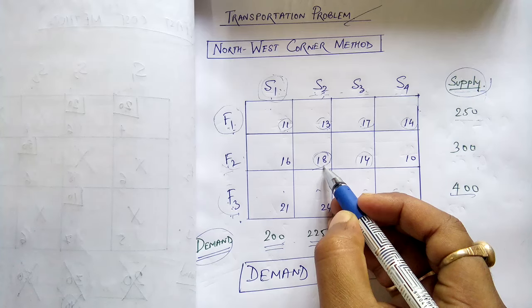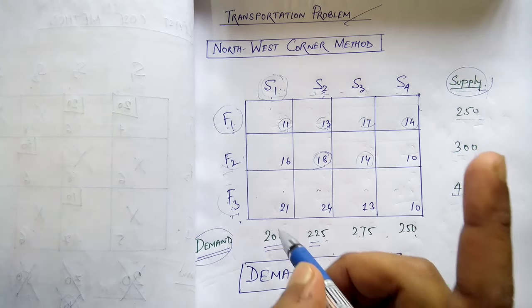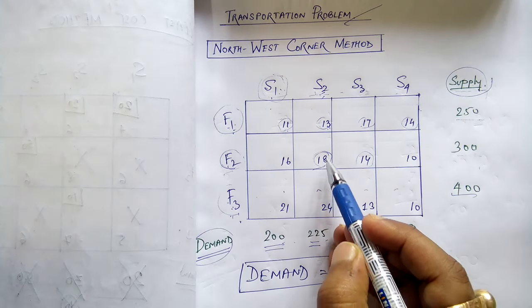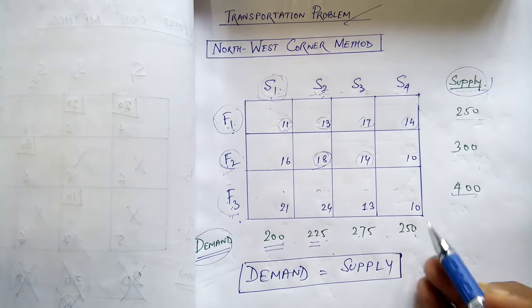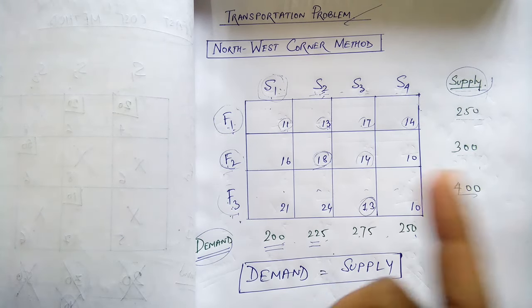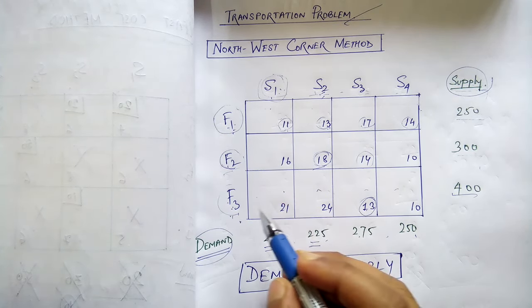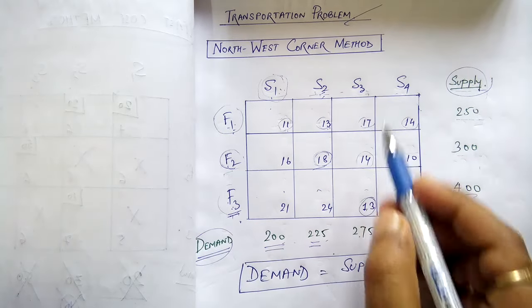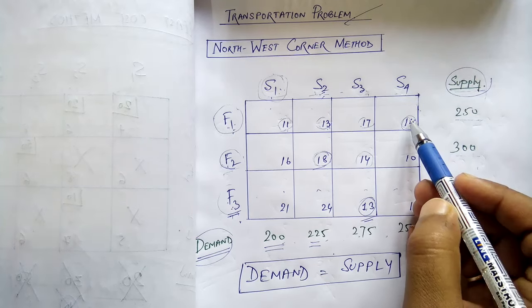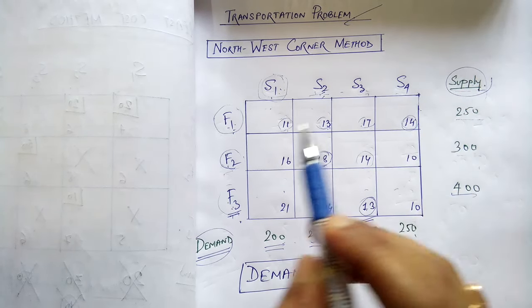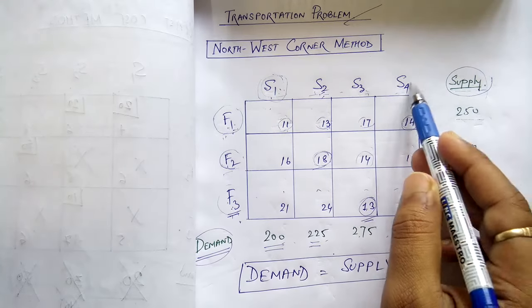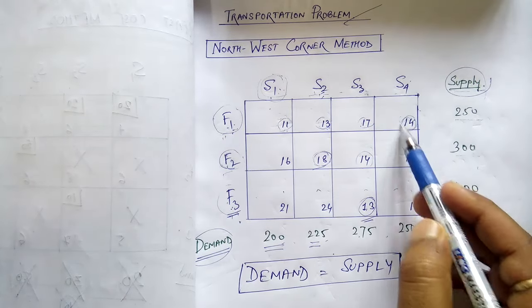Take the value 18 — what does this mean? If you want to transport one good from factory 2 to store 2, how much will it cost? 18 rupees. Now look at this value: if you want to transport one good from factory 3 to store 3, it will cost 13 rupees. And the value 14 means that transporting one good from factory 1 to store 4 will cost 14 rupees.